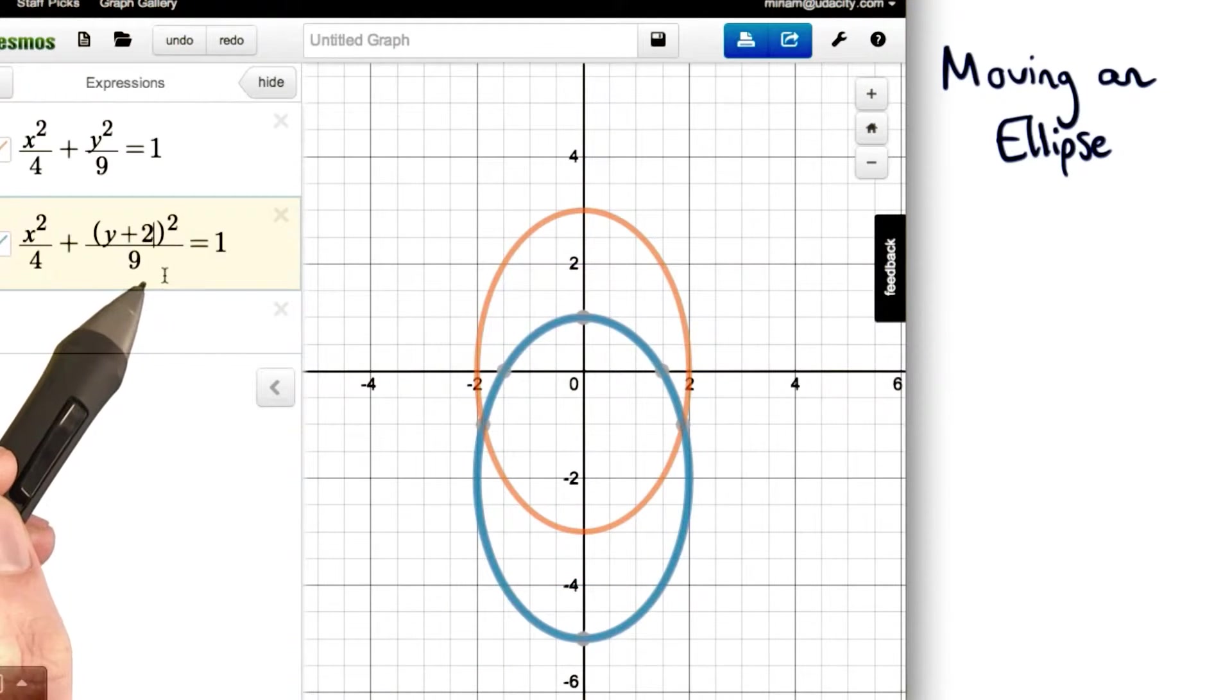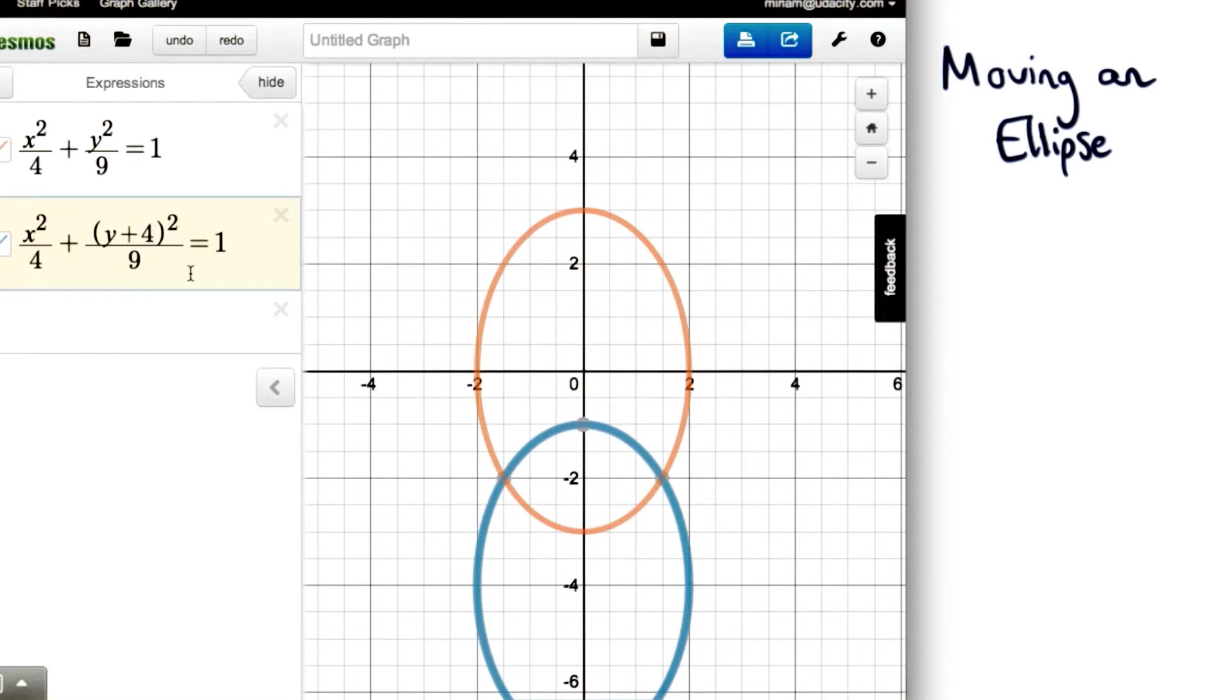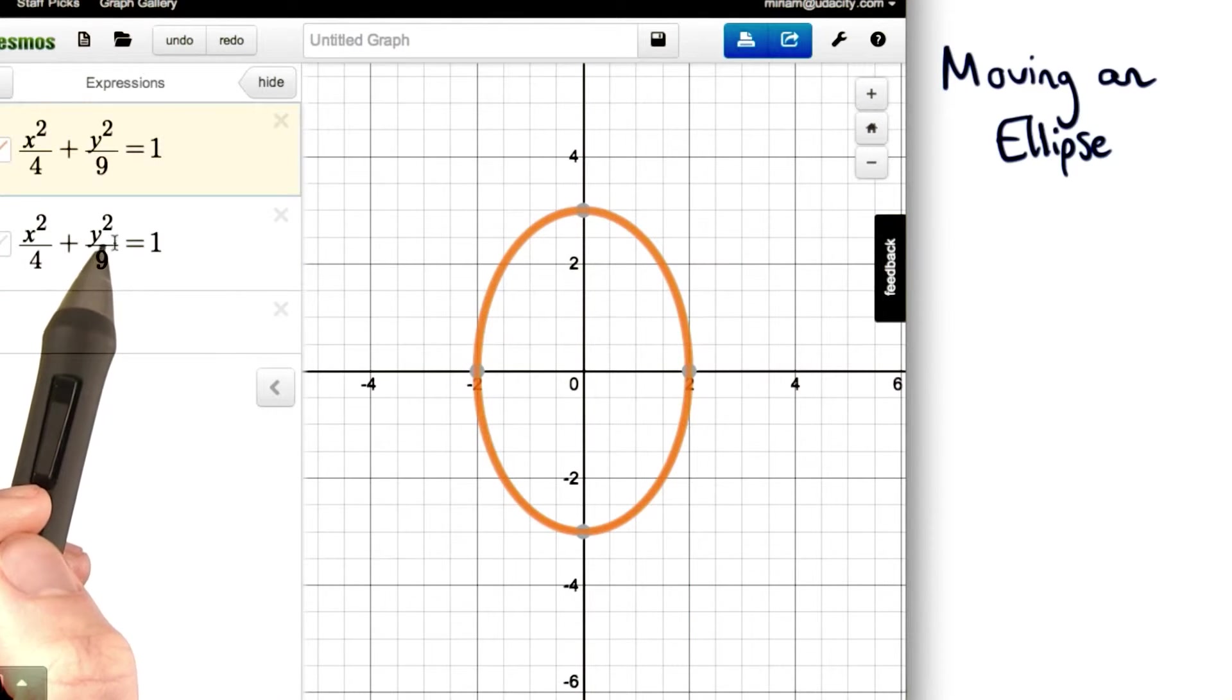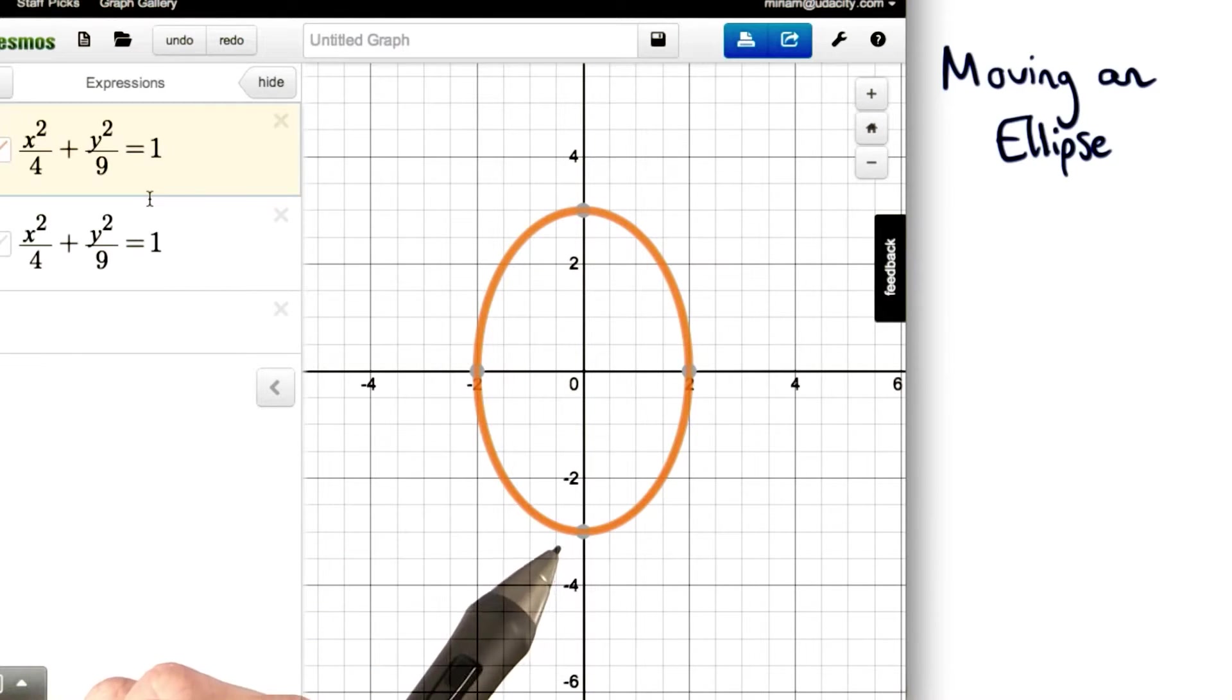And I could continue shifting it further down by adding a larger number, like two, or three, or four, and so on. So we know adding or subtracting to y makes a graph or an ellipse move up or down. So to move a graph left or right, we'll have to add or subtract to x.